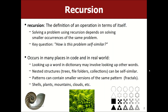Recursion is when you describe something in terms of itself. You're trying to solve a problem and your algorithm for solving it involves solving smaller or simpler versions of that same problem. A lot of algorithms have this quality. For example, the algorithm for looking up a word in the dictionary: you turn to the page with that word and read the definition. But sometimes the definition has words you don't know, so you look them up. The process of looking up a word in the dictionary might itself involve looking up words in the dictionary.